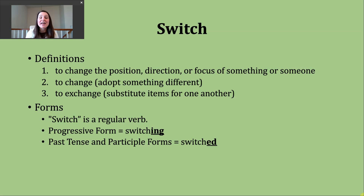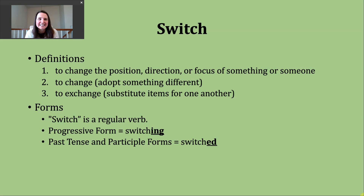You should know that the verb switch is a regular verb. To make the progressive form, we're just going to add -ing to form switching. To make the past tense and participle forms, we need to add -ed. Our base verb switch ends in this unvoiced -ch sound, so when I add my -ed ending, I'm going to make a t sound. It should sound like this: switched.